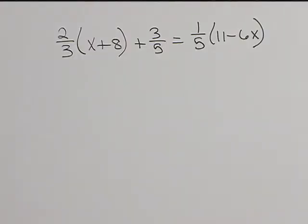Let's solve 2 thirds times the quantity x plus 8 plus 3 fifths equal to 1 fifth times 11 minus 6x.